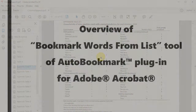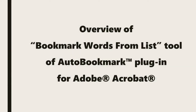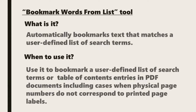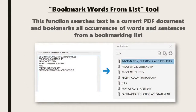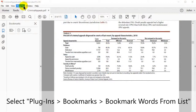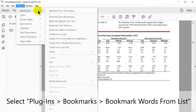Now let's look at an overview of the Bookmark Words from List tool. This tool automatically bookmarks text that matches a user defined list of search terms. We would use it to bookmark a user defined list of search terms or table of contents entries in PDF documents, including cases when physical page numbers do not correspond to printed page labels. To run it, select Plugins, then Bookmarks, and then Bookmark Words from List.